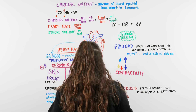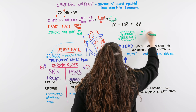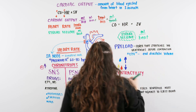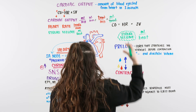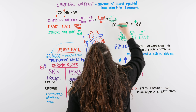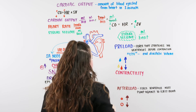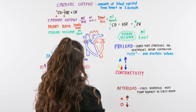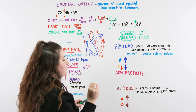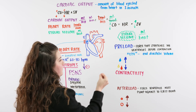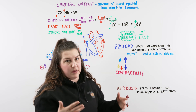Now we're going to talk about stroke volume. Stroke volume is our volume per beat — the amount of blood we push out every beat with our heart. If we increase stroke volume, we increase cardiac output. If we decrease stroke volume, we decrease cardiac output. Stroke volume can be broken down into three different things, which we'll discuss individually. It's measured in milliliter per beat.